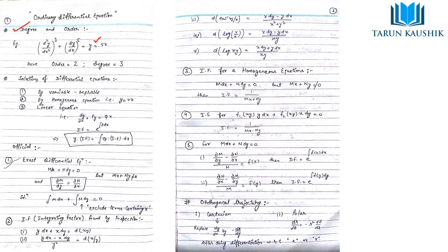As you can see the differential equation written here, the order is the highest derivative of the differential equation. Here the highest derivative is 2, that is the double derivative. The degree is the highest power of the highest order term. The highest order is 2, so the degree will be 3 — not 5. The order is 2 and the degree is 3.